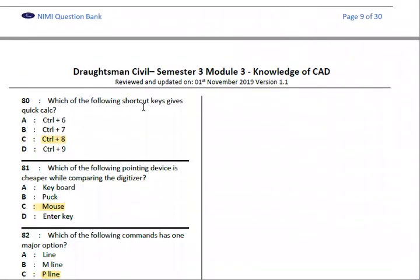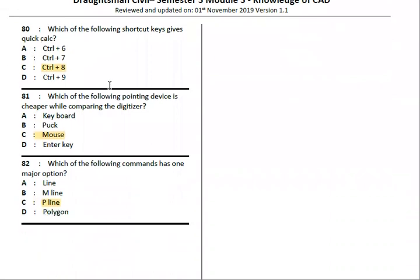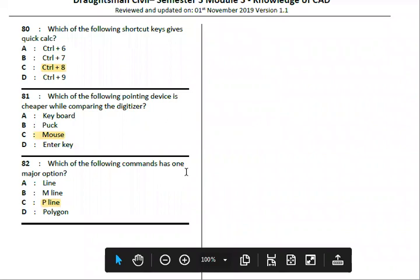Next, Quick Calculation shortcut is Ctrl+8. Which of the following commands has one major option? The answer is PLine.